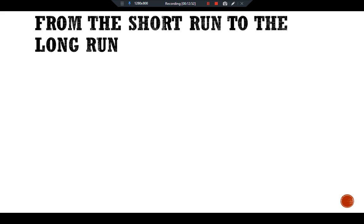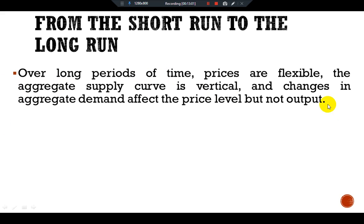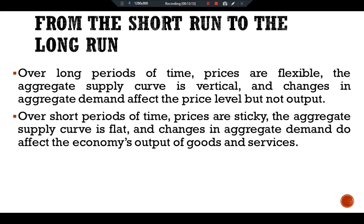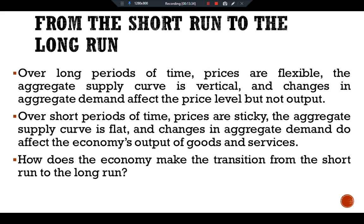From the short run to the long run, we can summarize our analysis as follows. Over long periods of time, prices are flexible, the aggregate supply curve is vertical, and changes in aggregate demand affect the price level but not output. Over short periods of time, prices are sticky, the aggregate supply curve is flat, and changes in aggregate demand do affect the economy's output of goods and services but not the price level. One of the main questions is: how does the economy make the transition from the short run to the long run? Let's see the effect over time of a fall in aggregate demand.